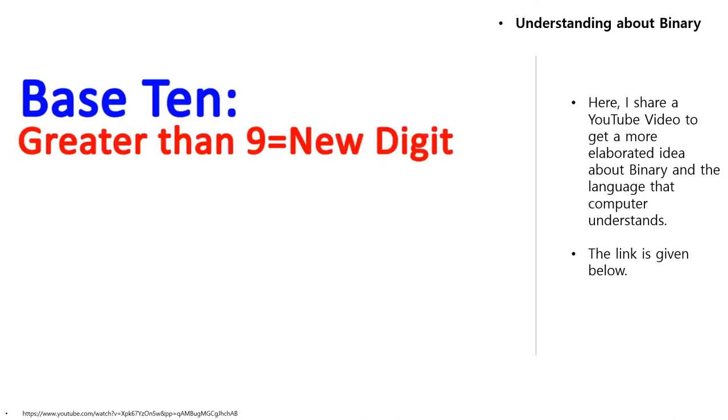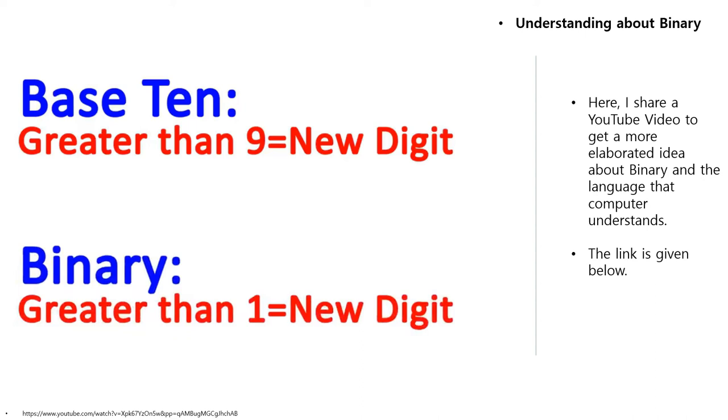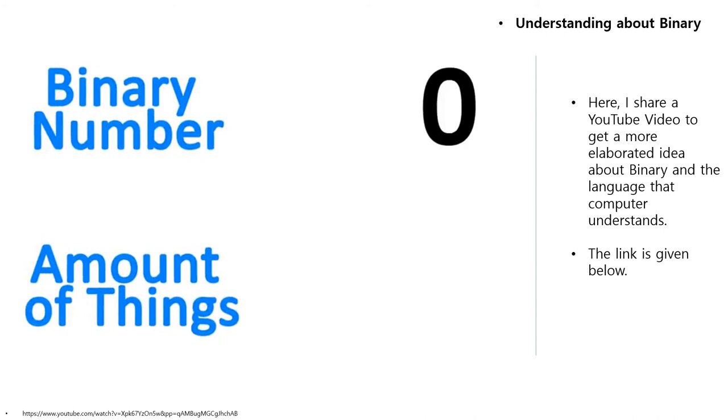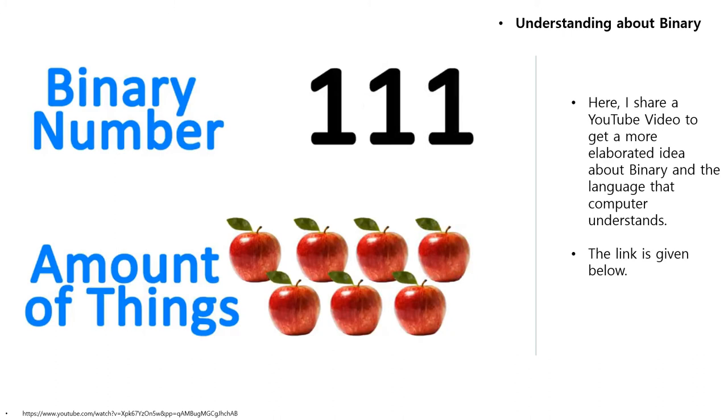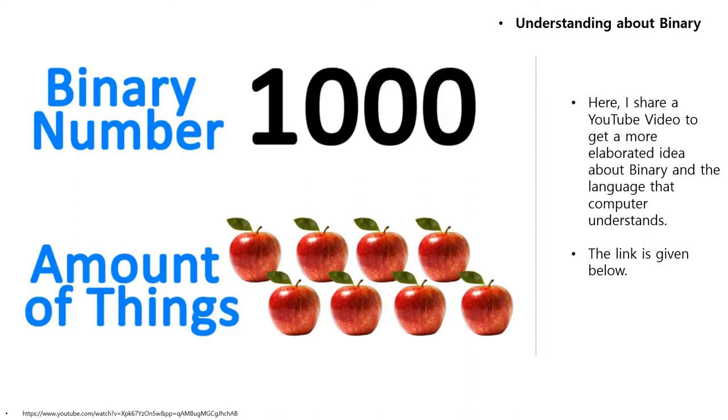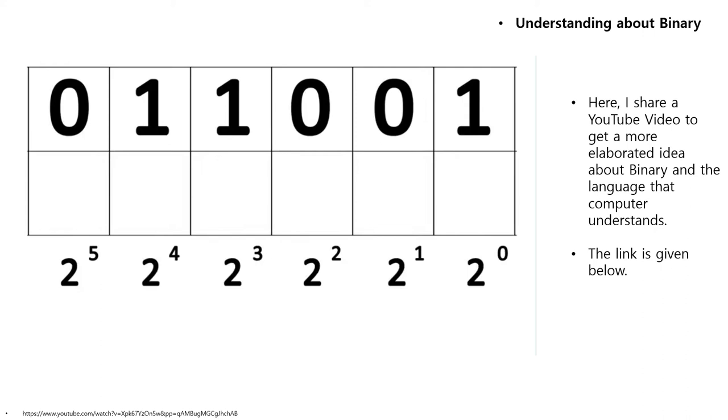Binary works the exact same way as base 10 positional, but instead of each digit going from 0 to 9, it goes from 0 to 1. Counting upwards in binary sounds like this: 0, 1, 10, 11, 100, 101, 110, 111, and 1000. Because each digit of binary has only 2 values and not 10, each additional digit represents an increasing power of 2 rather than an increasing power of 10. So this is the number of ones we have, the number of 2s, 4s, 8s, 16s, 32s, 64s, 128s, and so on.